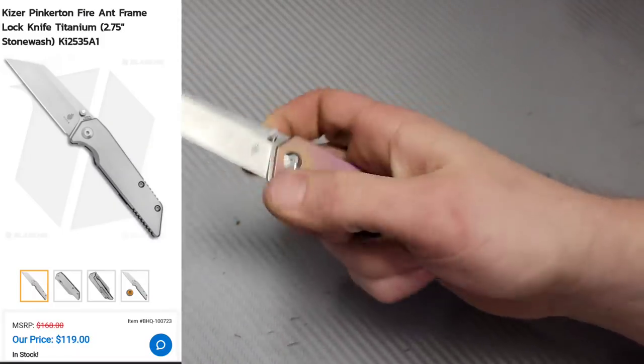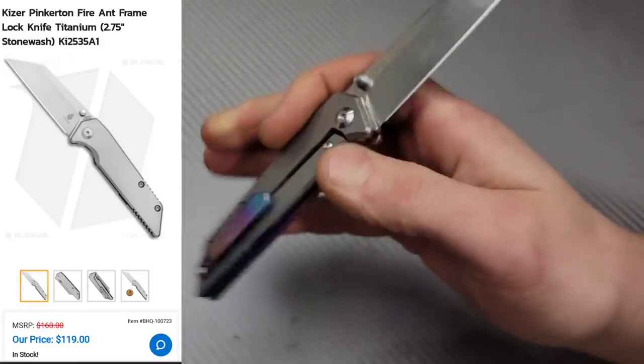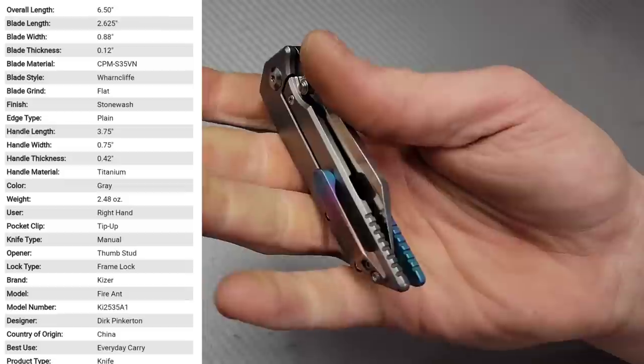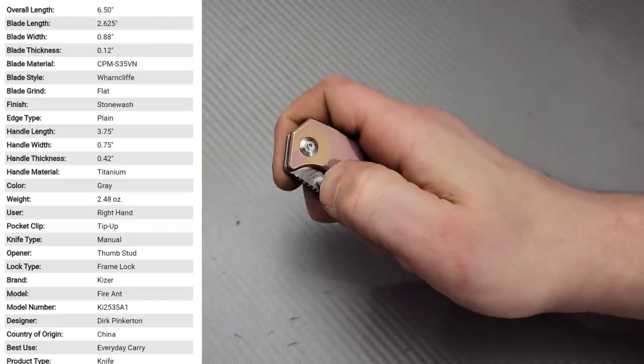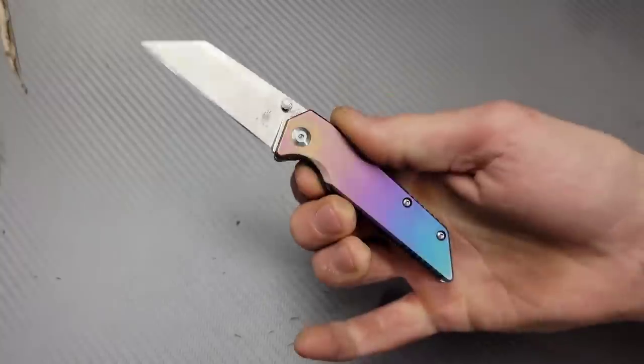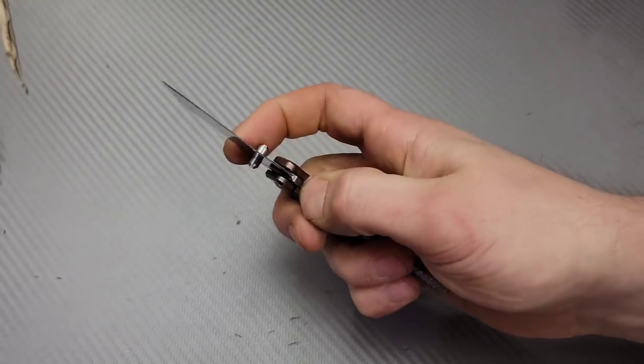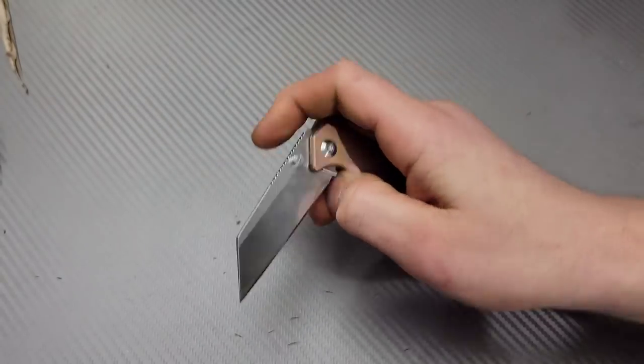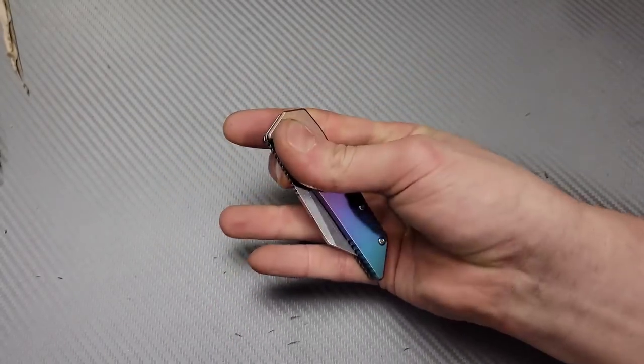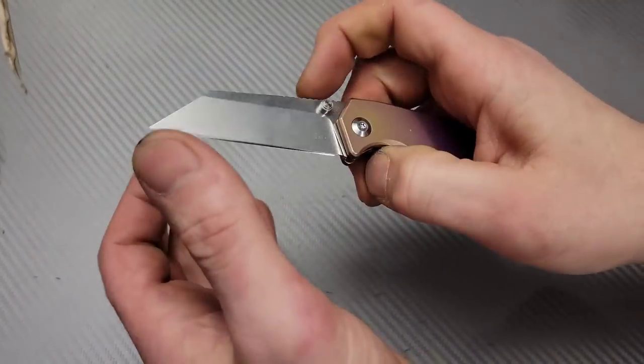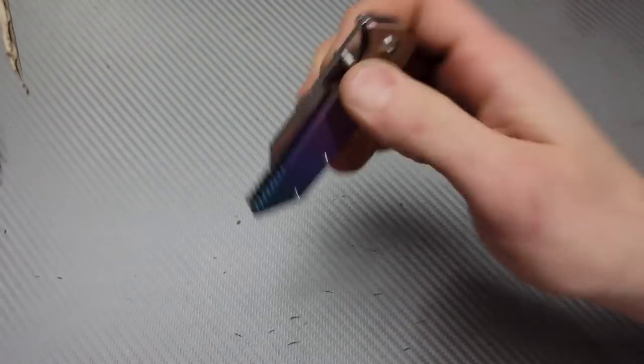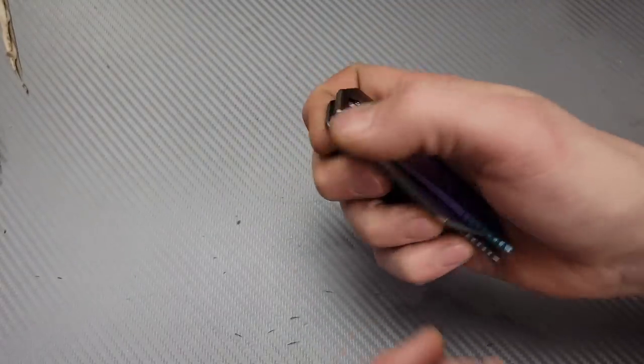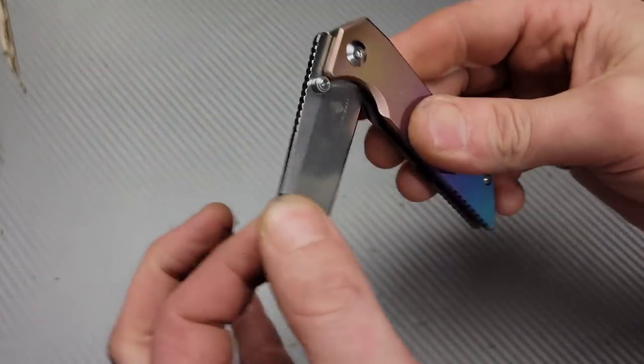Next we have the Kaiser Fire Ant. This is a Dirk Pinkerton design. S35VN blade steel and it's riding on phosphor bronze washers and Teflon that gives you an ultra smooth deployment and closing. The deployment and closing smoothness is not like bearings where it's drop shutty. It's super smooth frictionless action.